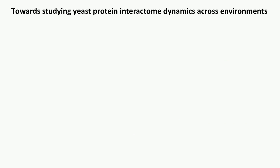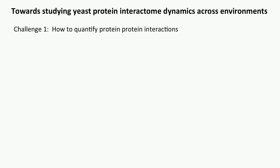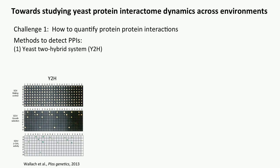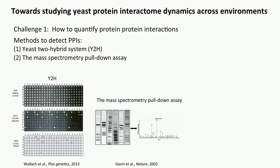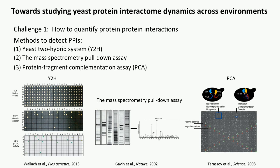To start this project, we need to overcome several challenges. The first challenge is how to quantify the protein-protein interactions. There are three main traditional methods: the yeast two-hybrid system, the mass spectrometry pull-down assay, and the protein fragment complementation assay, PCA. But all of those assays are aimed to set a threshold to identify which proteins interact — in other words, they identify protein-protein interactions, but not quantify their abundance.